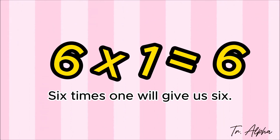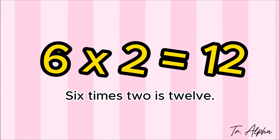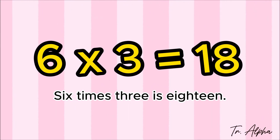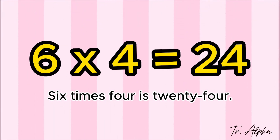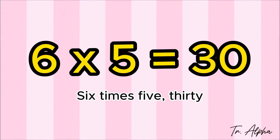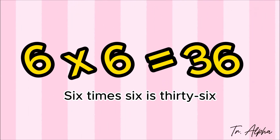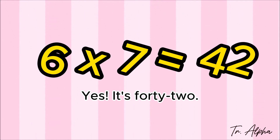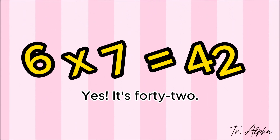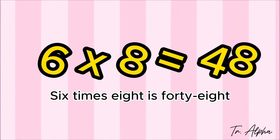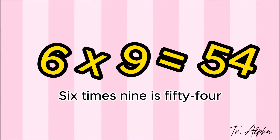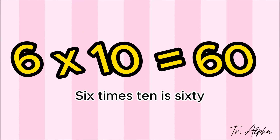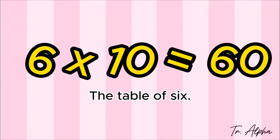6 times 1 will give us 6. 6 times 2 is 12. 6 times 3 is 18. 6 times 4 is 24. 6 times 5, 30. 6 times 6 is 36. 6 times 7, 42. Yes, it's 42. 6 times 8 is 48. 6 times 9 is 54. 6 times 10 is 60, the table of 6.